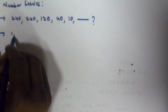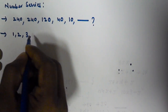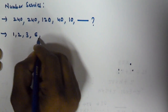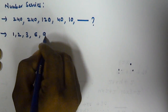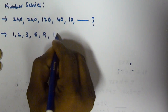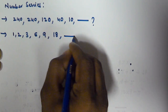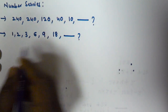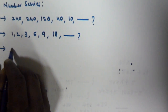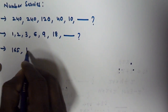The second problem is 1, 2, 3, 6, 9, 18 — and we have to find the next number in this series.